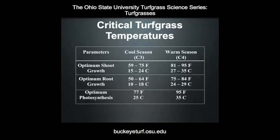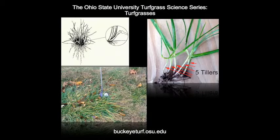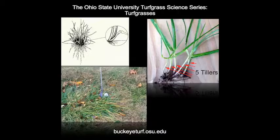Growth habit is a means of grouping cool season turfgrasses. Turfgrasses that spread through tillering are referred to as bunch type. The photo with the golf club resting on a patch of tall fescue reflects the bunch type growth habit of this turfgrass. Perennial ryegrass, tall fescue, and some of the fine fescues have bunch type growth habits.